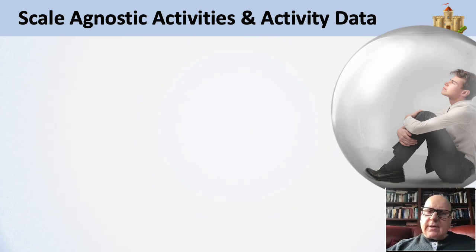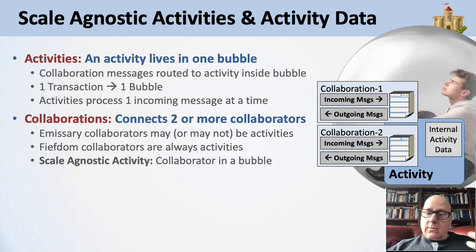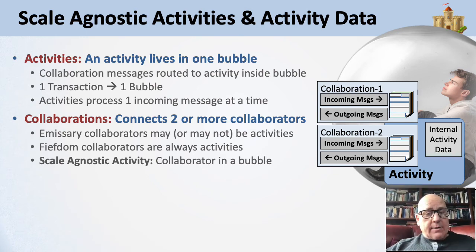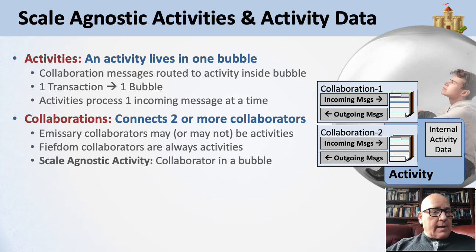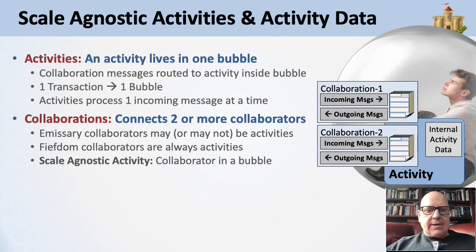I can do scale agnostic activities and activity data with this model. An activity lives in exactly one bubble, with collaboration messages routed to it. One transaction, one bubble. Activities process one incoming message at a time. Collaborations connect two or more collaborators — inside the fiefdom, the collaborators are always activities. So I can have a scale agnostic activity which is a collaborator in a bubble. The person writing the code for this activity doesn't care how many concurrent activities there are — they just care about managing the collaborations to do their work.